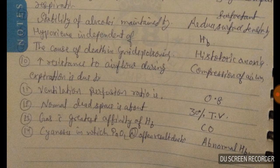Question number thirteen: the gas with the greatest affinity for hemoglobin is carbon monoxide. Cyanosis is related to the partial pressure of oxygen being normal, but resulting from abnormal hemoglobin.